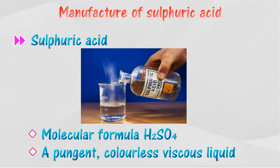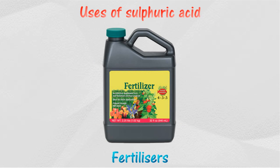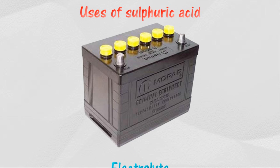Sulfuric acid has many uses in our daily life. It is used to manufacture other substances. A large portion of sulfuric acid is used to make fertilizer. Sulfuric acid is also used to manufacture the electrolyte in lead-acid accumulators, or car batteries.